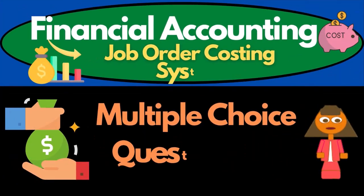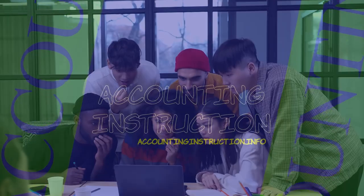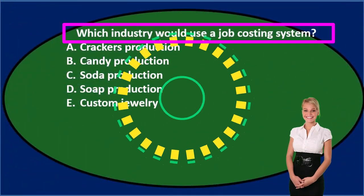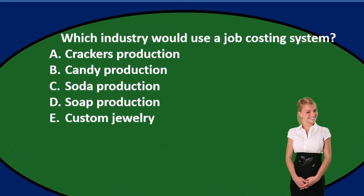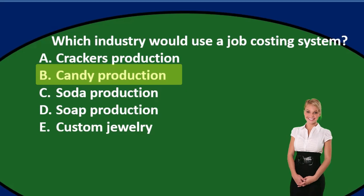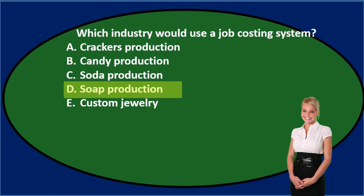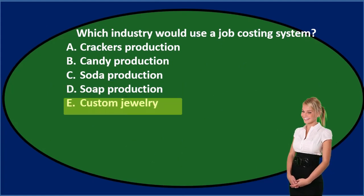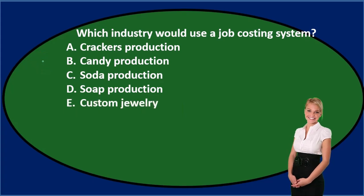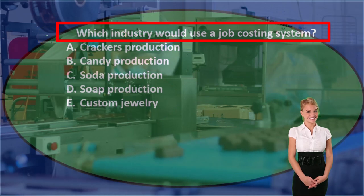In this presentation we will take a look at multiple choice questions related to a job cost system. First question: which industry would use a job cost system? A) crackers production, B) candy production, C) soda production, D) soap production, or E) custom jewelry. Let's go through this using the process of elimination.